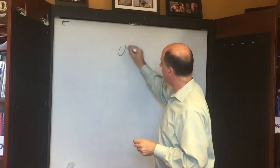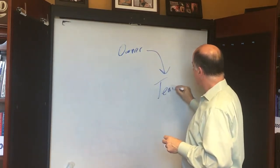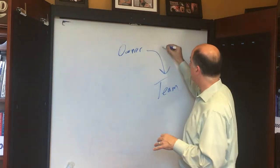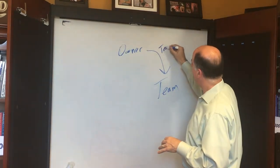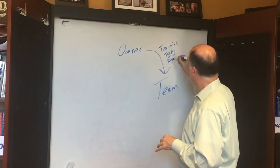So we have you as the owner and your number one job is to take care of your team. That's what that arrow means, take care of your team. That means provide them with the tools, the training, and the environment.